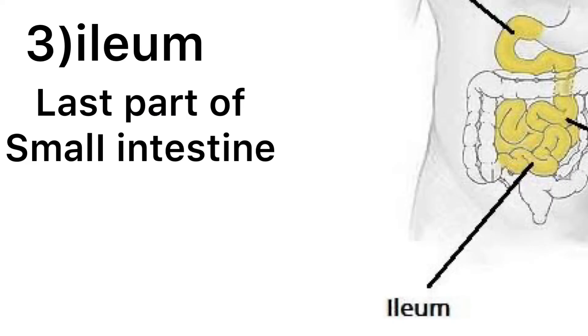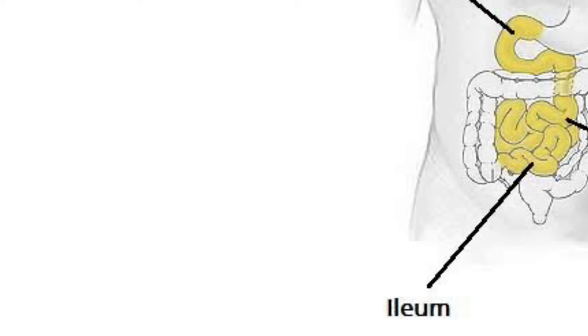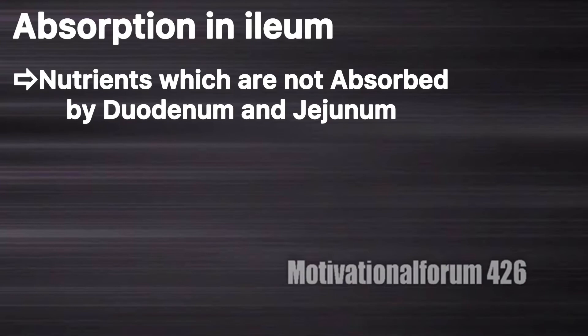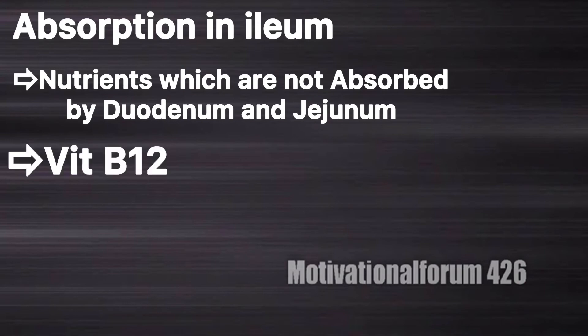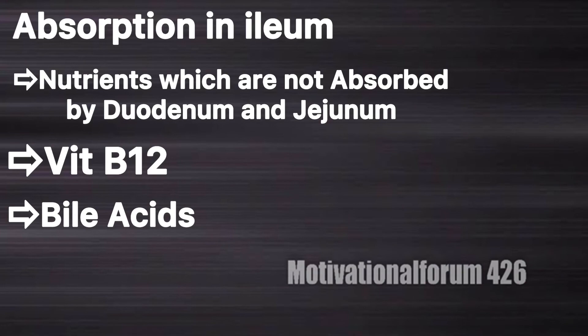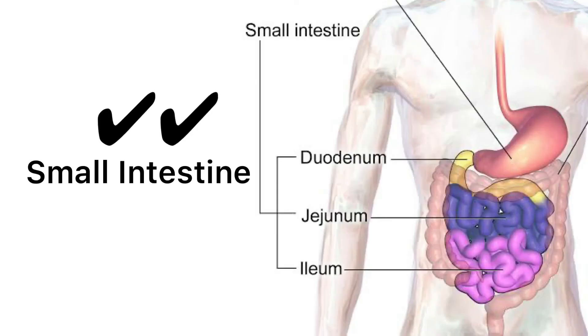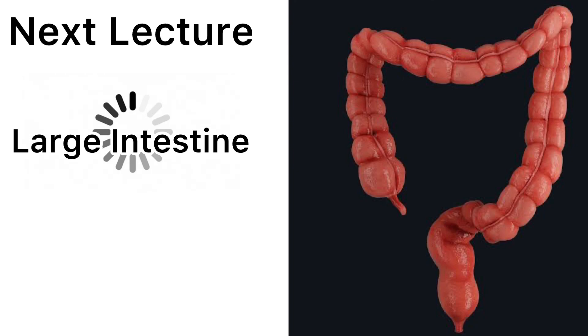Next to the jejunum is the ileum, which is the last part of the small intestine. The ileum absorbs the nutrients that are not absorbed by the jejunum. The most important nutrients absorbed by the ileum are vitamin B12 and bile acids, which can be reused. That's all about the small intestine; in the next lecture we will talk about the large intestine.